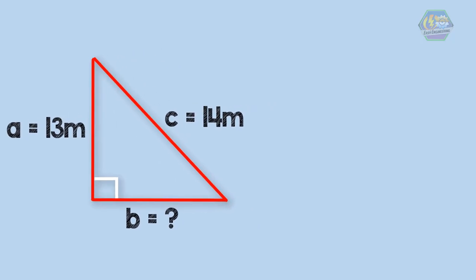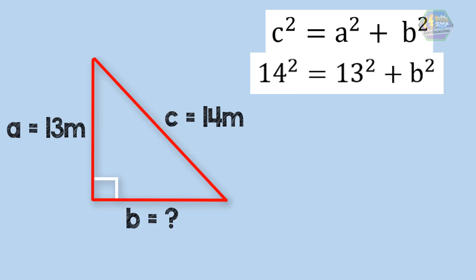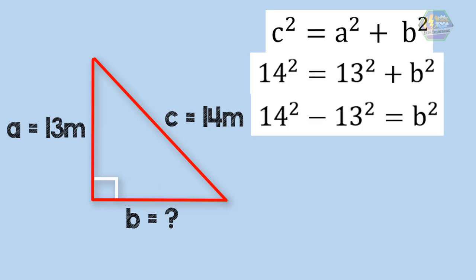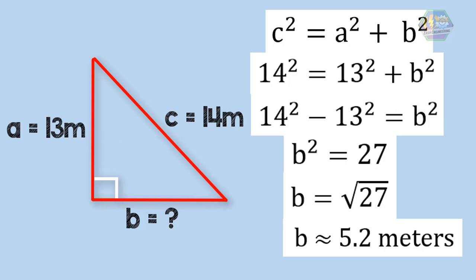According to the Pythagorean theorem, c² = a² + b². Plugging in the values, the equation becomes 14² = 13² + b². Since we need to find b, we transpose the equation: 14² − 13² = b². So b² = 27. To find b, we take the square root of both sides, giving b = √27. Therefore the distance of the foot of the ladder to the bottom of the wall is approximately 5.2 meters.